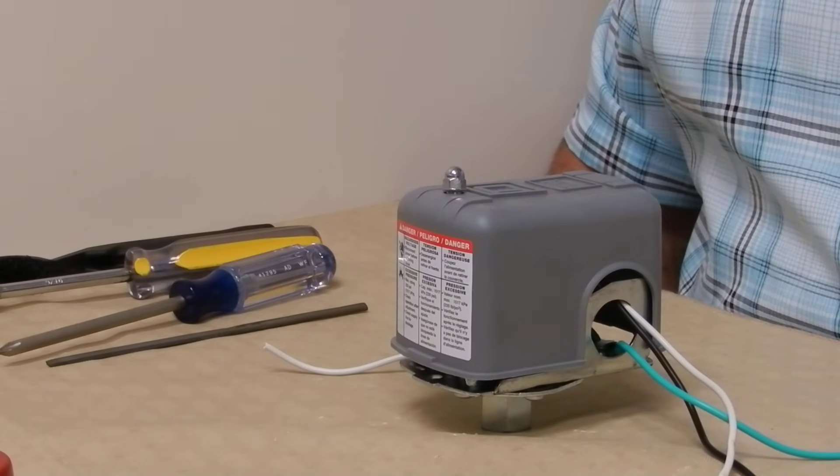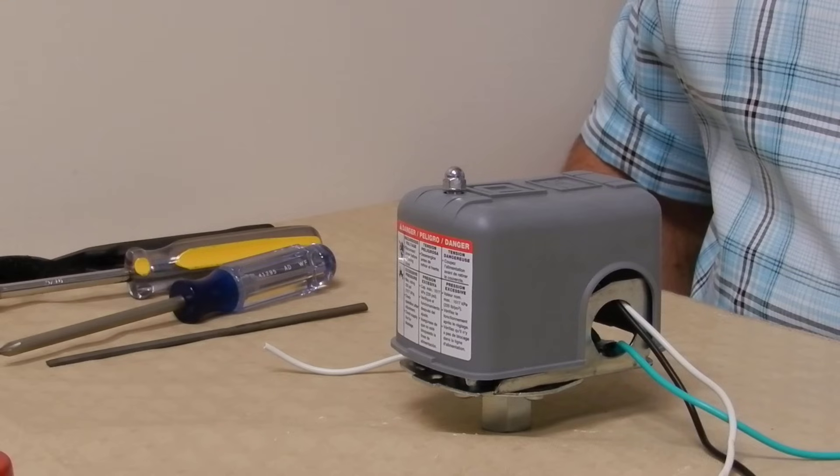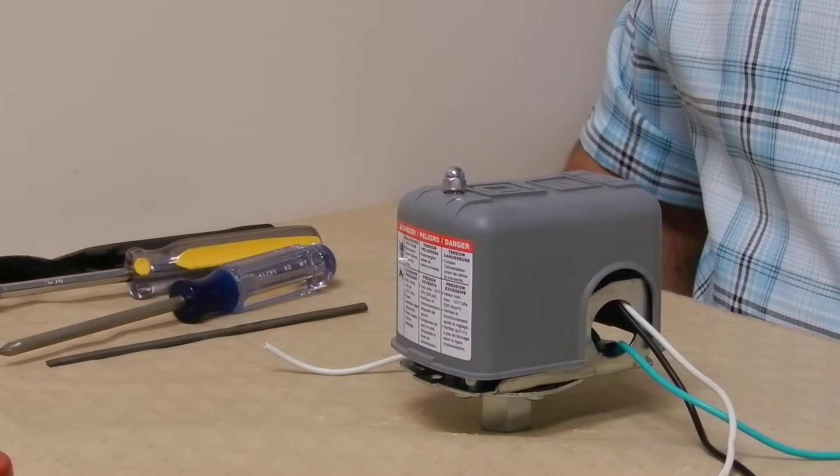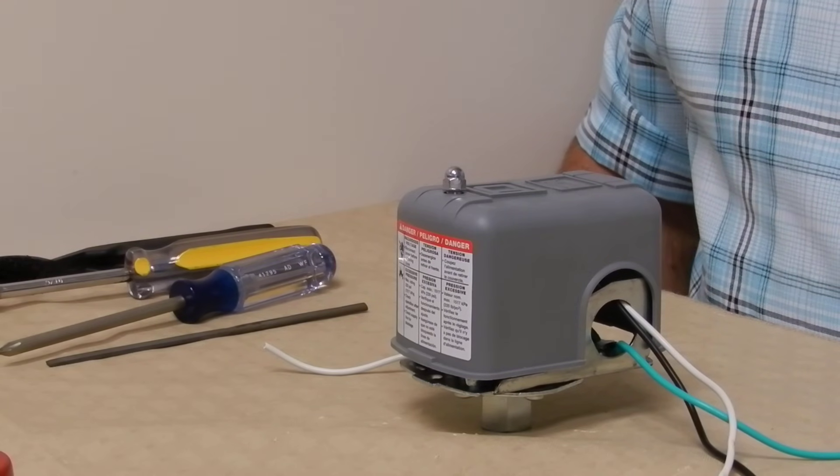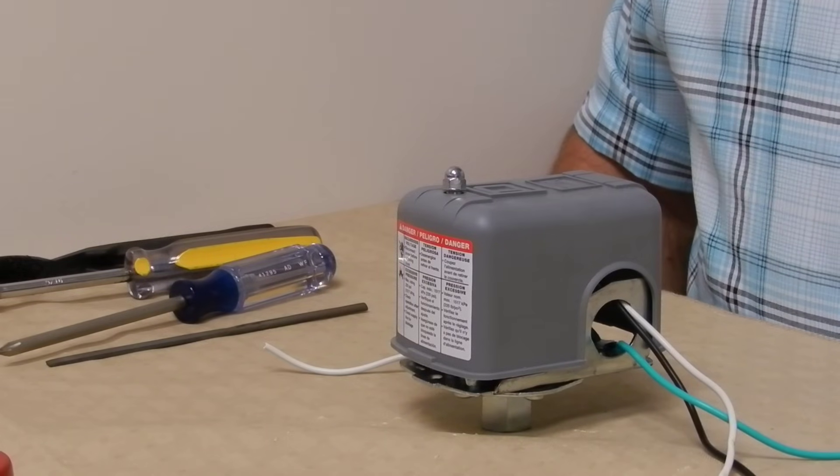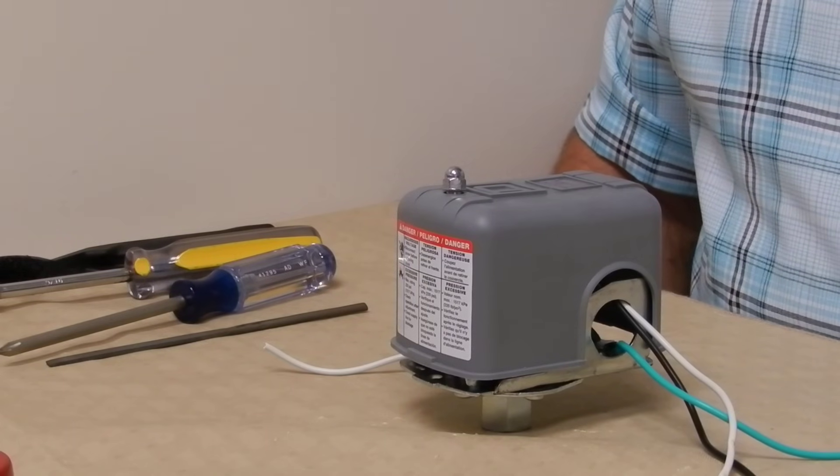If you have a well, you have a pressure switch. The pressure switch is the device that turns the well on and off according to water demand. When the switch fails, you will have no water.